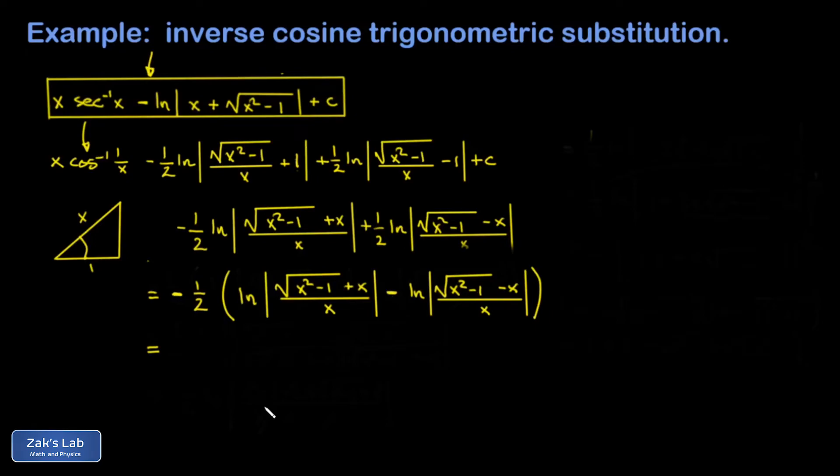Then I remember that the difference of two natural logs gives me the log of the quotient. So I'm going to take this first argument and divide by the second argument. That's the same as multiplying by the reciprocal. And when I do that, the factors of x cancel.